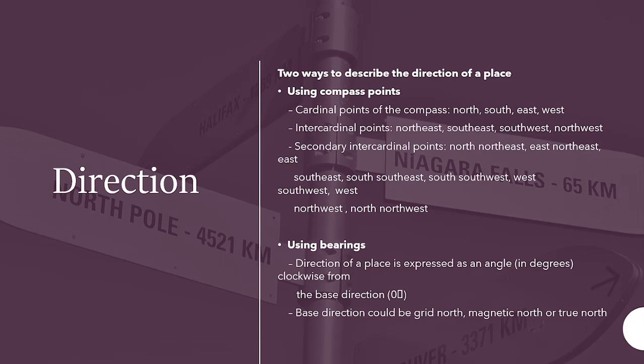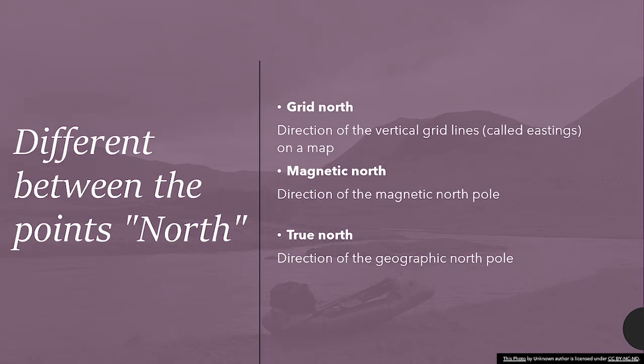You can also describe a direction of a place using bearings. The direction of a place is expressed as an angle in degrees clockwise from the base direction, which would be zero degrees. Base direction could be grid north, magnetic north, or true north. The difference between the points north: grid north, direction of the vertical grid lines called eastings on a map. Magnetic north, direction of the magnetic north pole. True north, direction of the geographic north pole. Any questions?